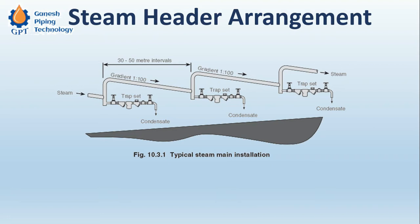At every 30 to 50 meters of distance along the pipe rack, a steam trap is installed. The reason is that steam loses heat as it travels — even though steam lines are insulated, there is always some heat loss to the atmosphere. Because of this heat loss, condensate — liquid water — is formed, and this water travels along with the steam.